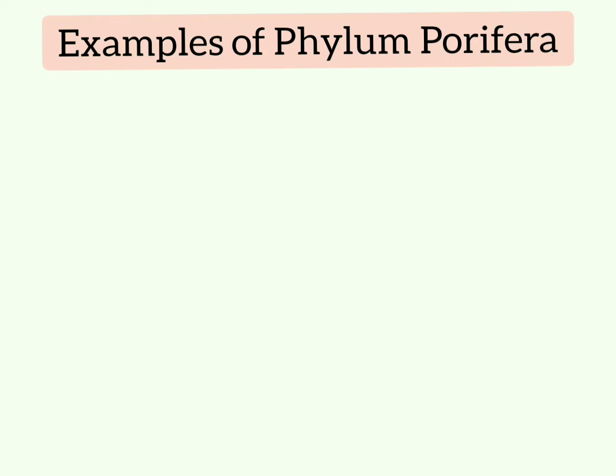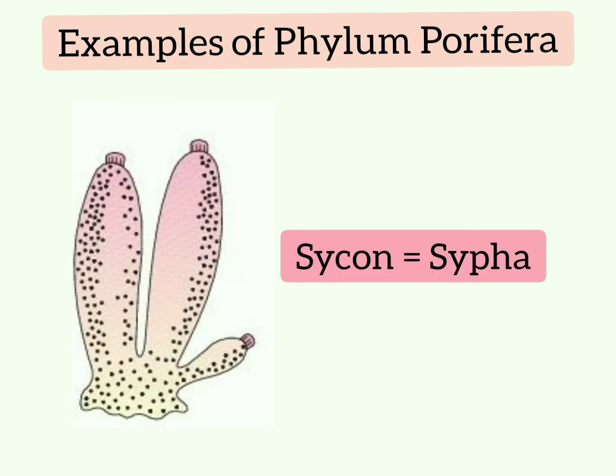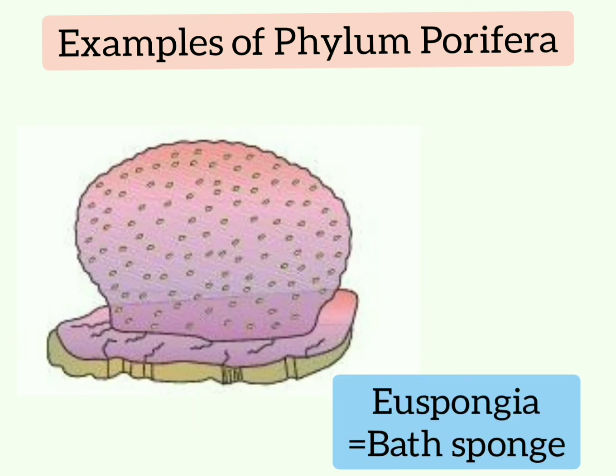Examples of Phylum Porifera include Spongilla, a freshwater sponge; Sycon, also known as Scypha; and Euspongia, also known as the bath sponge.